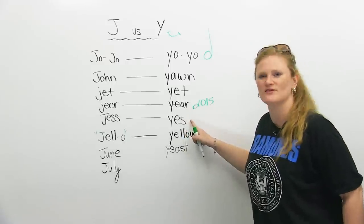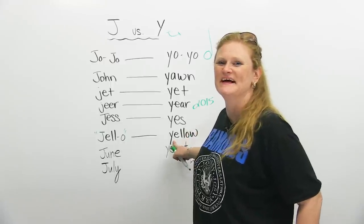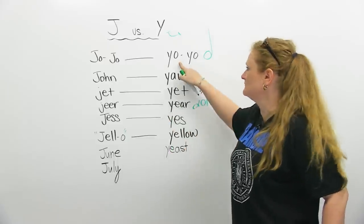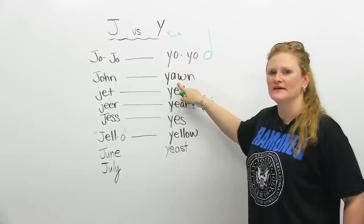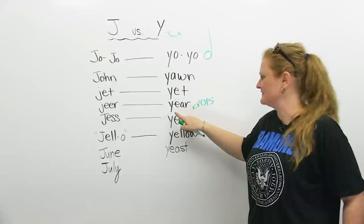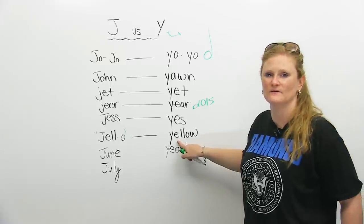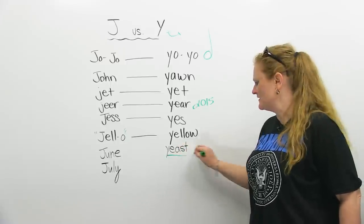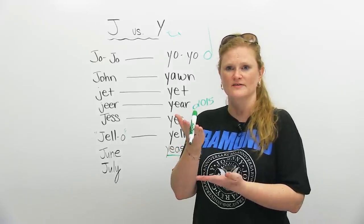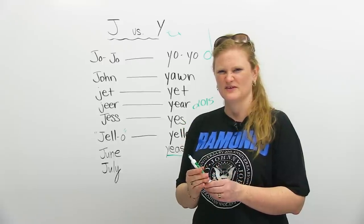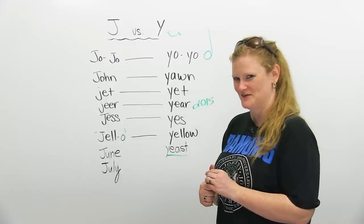Yes — not Jess, yes. The beautiful color: yellow. Let's practice one more time: yo-yo, yawn, yet, year, yes, and yellow. Oh, we've forgotten one — yeast. Yeast is something that we use to make bread or pastries rise. It's also an infection that some people get. Let's not talk about that in the pronunciation lesson — we'll save that one for later.